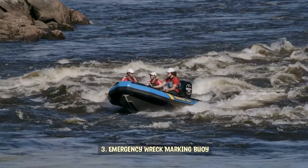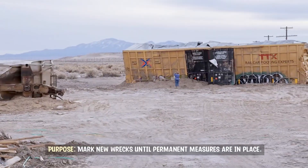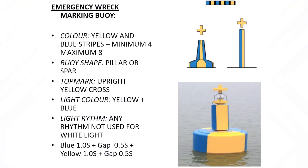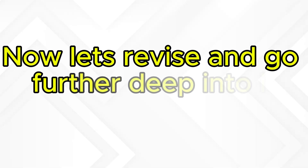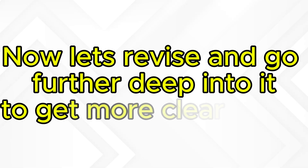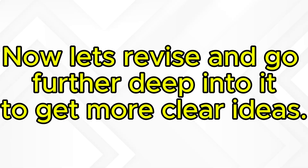Emergency wreck marking buoy. Purpose: mark new wrecks until permanent measures are in place. Features: blue and yellow vertical stripes. Top mark: yellow upright cross. Light: alternating blue and yellow flashes. Now let's revise and go further deep to get more clear ideas.